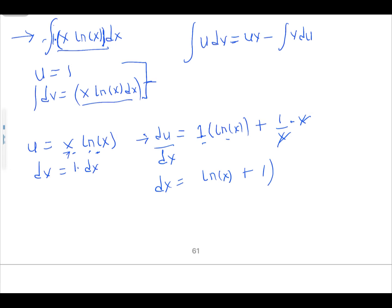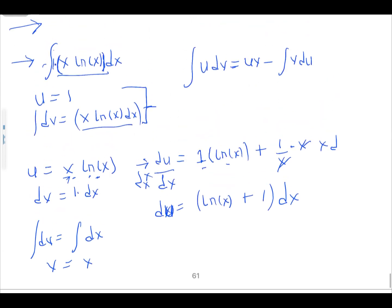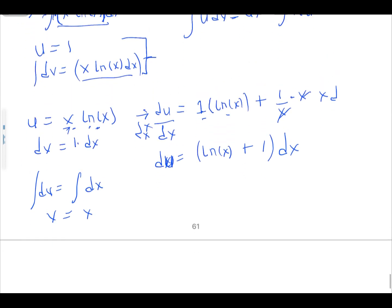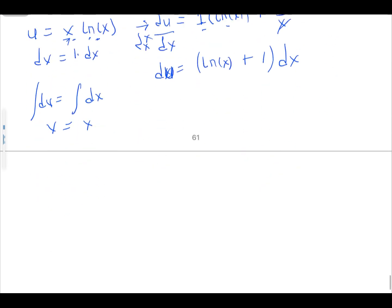The 1/x and x cancel to give 1, so du = (ln(x) + 1) dx. For our v, we integrate dv = dx, giving us v = x. Now we substitute everything into the formula.